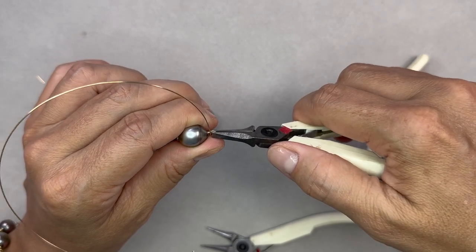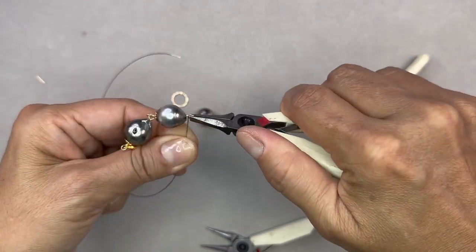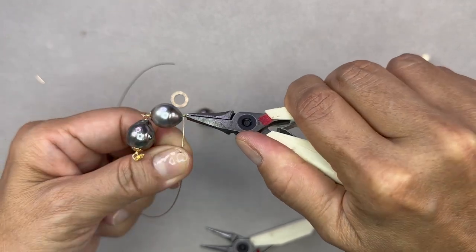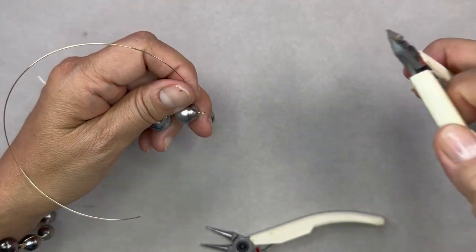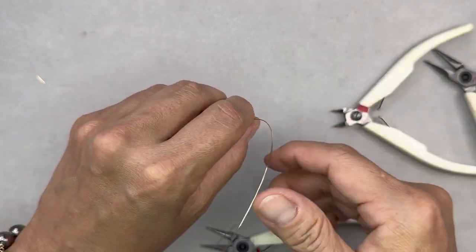The larger the loop it kind of pulls your eye away from the focal point and so if you can keep your loops small all your attention will be on your main part which in this case is the Tahitian pearls.